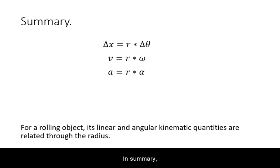In summary, for a rolling object against some surface, its position, velocity, and acceleration are related to its rotational quantities through the radius.